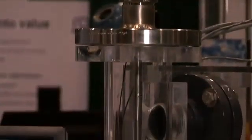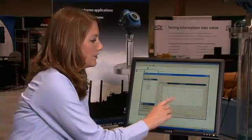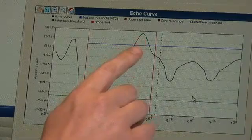Okay, now we've cleaned the probe. Let's go back over here to the AMS screen and take a look at the echo curve. As you can see on the echo curve we no longer have a disturbance from the contamination.